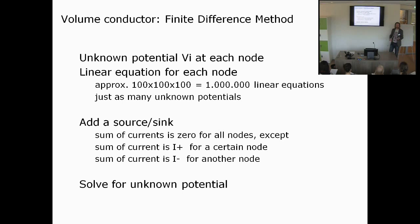The finite difference method is a very inefficient method because the computation of the potential distribution depends on where the source is, requiring computation for every possible source configuration, and it also requires a lot of memory.